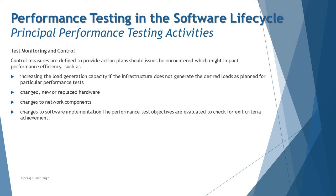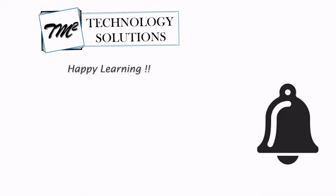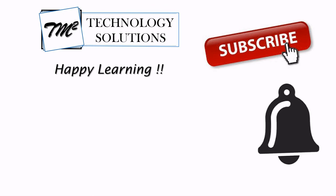To summarize Part 1, we covered test planning and monitoring and control from the performance testing perspective. In Part 2, we will continue with the remaining test process stages: test analysis, design, implementation, and execution. Feel free to comment below with any questions. Till then, keep learning, keep exploring, and happy learning!